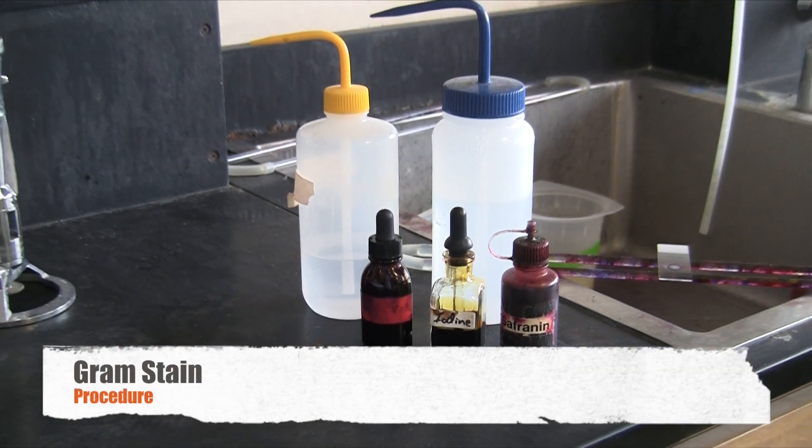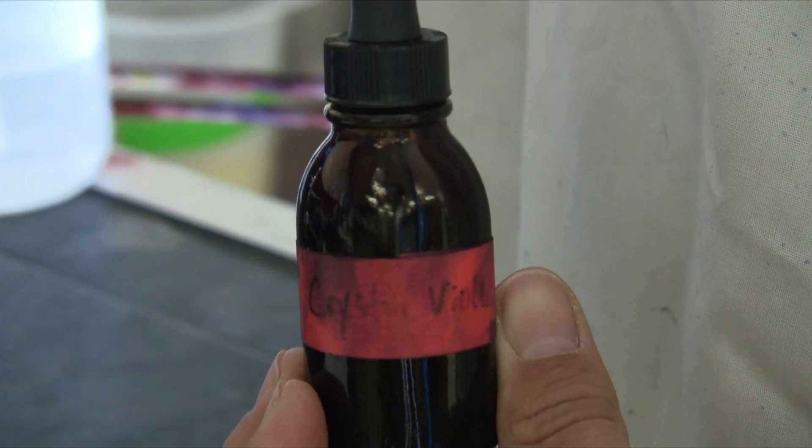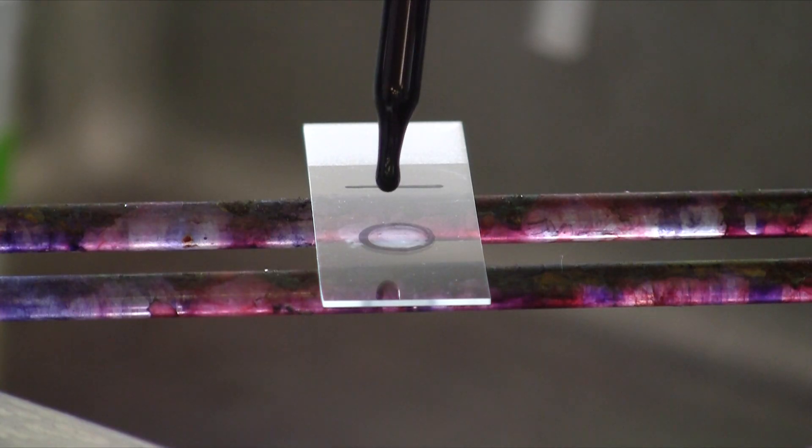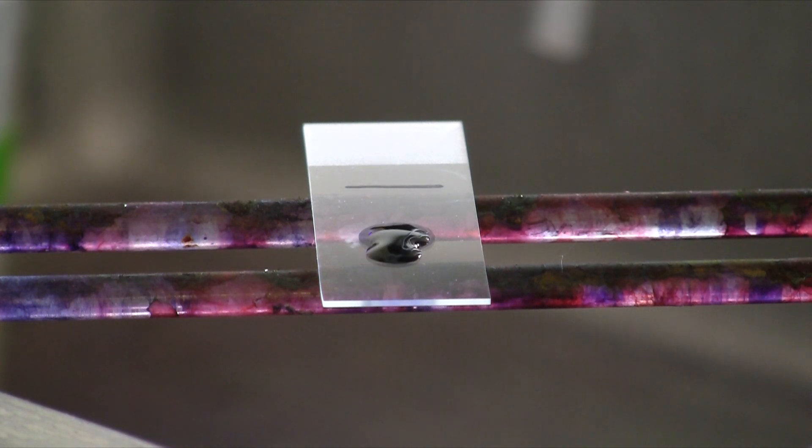The Gram stain is the most important stain in all of microbiology. It's your biggest tool for identifying unknowns. We'll begin with the crystal violet dye. Place this onto your smear prep and let it sit for one minute.